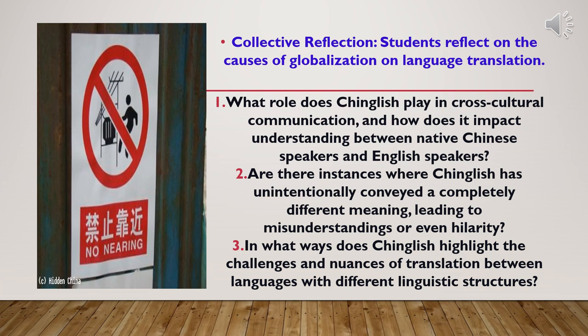In each collective reflection, students are going to reflect on the causes of globalization on English translation specifically. What role does Chinglish play in cross-cultural communication, and how does it impact understanding between native Chinese speakers and English speakers? Are there instances where Chinglish has intentionally conveyed a completely different meaning, leading to laughter or misunderstanding? In what ways does Chinglish highlight the challenges of translation between languages with different linguistic structures? We're going to study the effect of globalization on translation — whether it is positive or negative and what impacts it has caused.